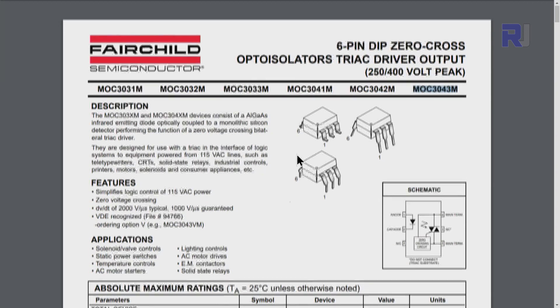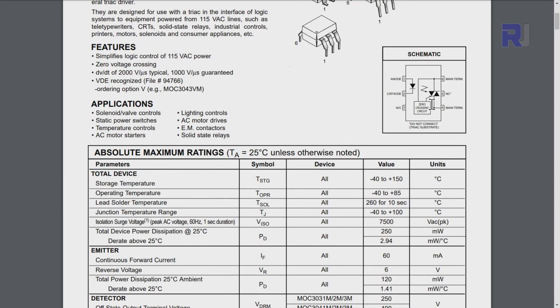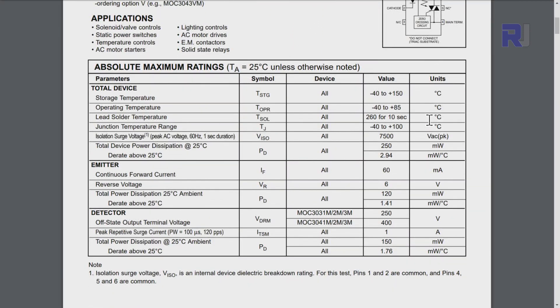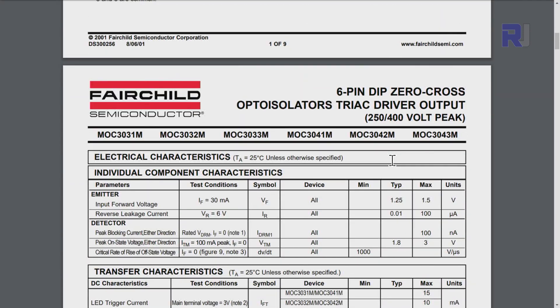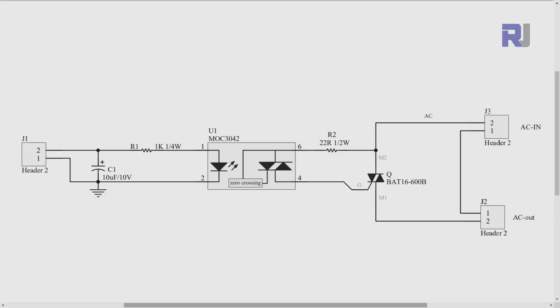This is the datasheet for this MOC3043, the model that is used here. Here is a schematic diagram of this - it has zero crossing. I will provide you the link in case you need to have a look at this, and here is a diagram for this BTA16-600 triac.